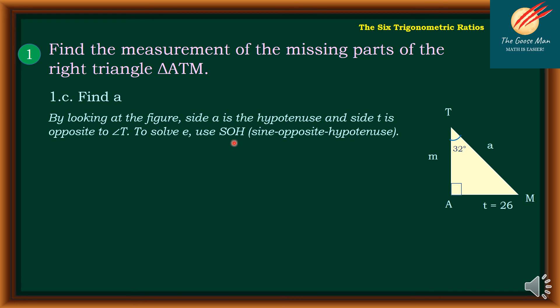We will use SOH, so that is sine opposite hypotenuse. Again, sine T equals opposite over hypotenuse. So that is T over A, but the value of angle T is 32, and side T equals 26 over A.